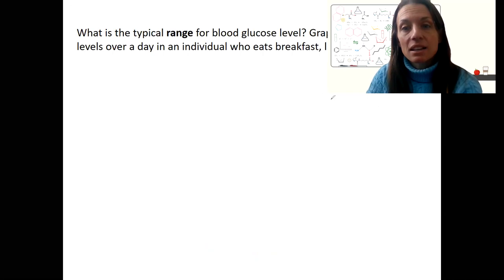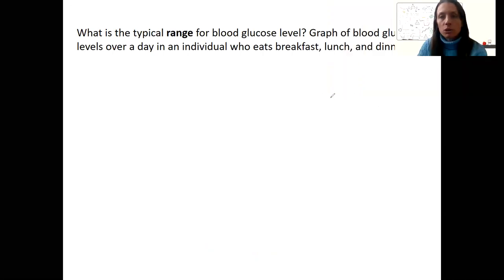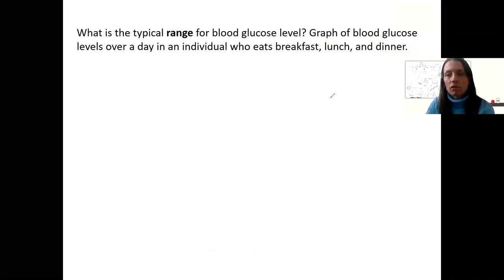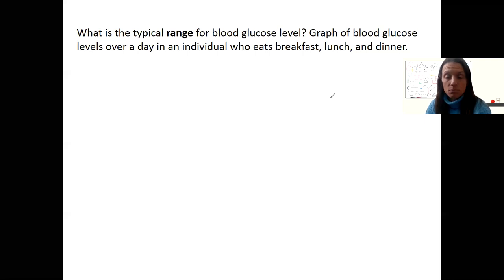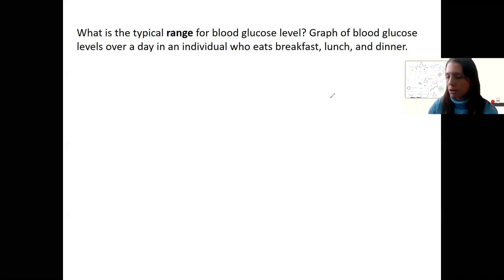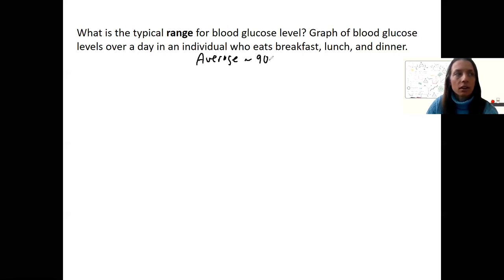First, I want to back up and give you a big picture of why this is important. I want you to try to graph for yourself the typical range of blood glucose levels over a day for an individual who has three meals — breakfast, lunch, and dinner. Typical blood glucose average is about 90 milligrams per deciliter.